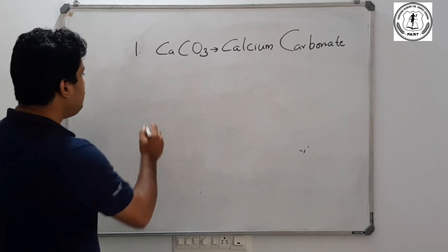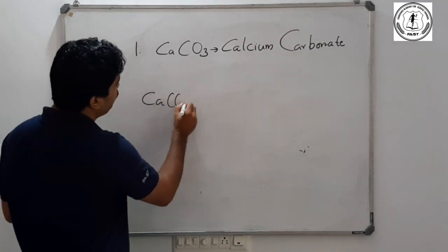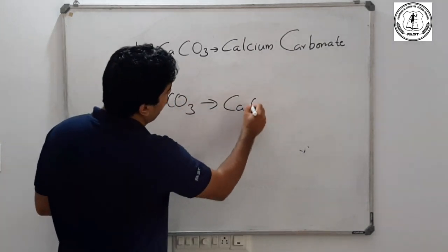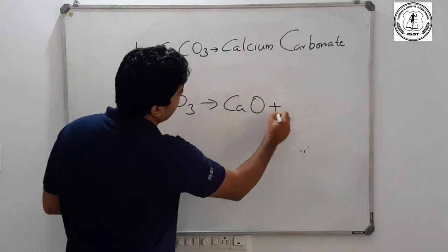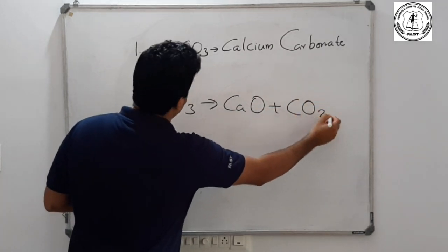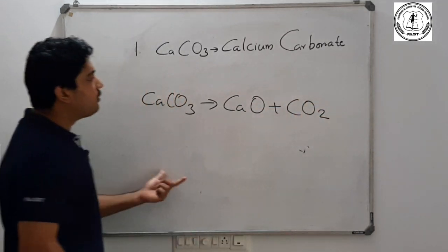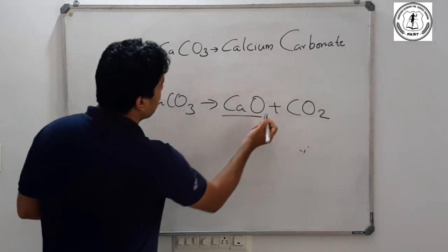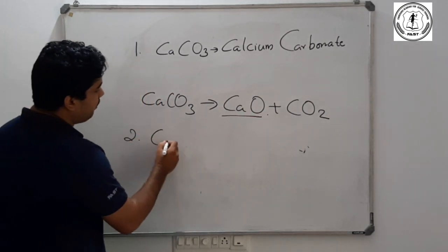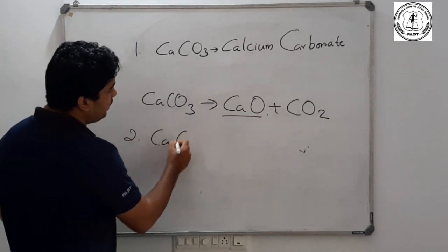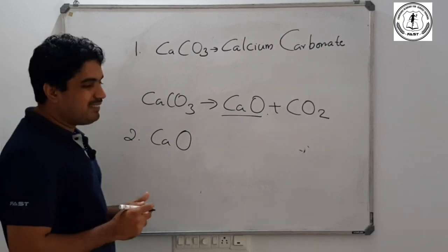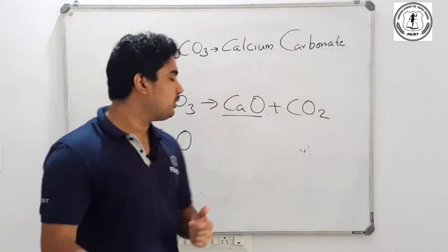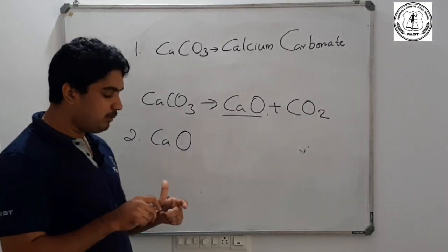This CaCO3 gives calcium oxide plus CO2. The second compound is calcium oxide. CaCO3 decomposes to give calcium oxide and we use calcium oxide.